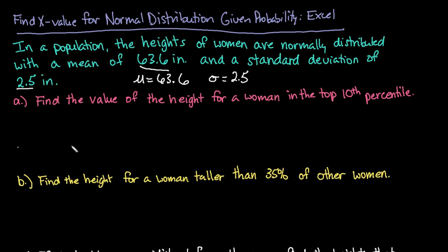So the first one that we have is it tells us to find the value of the height for a woman in the top 10th percentile. So for this one what's going to happen is it's going to be centered at 63.6 which is our mean. And the top 10 percent would mean that our area up here would be 10 percent.